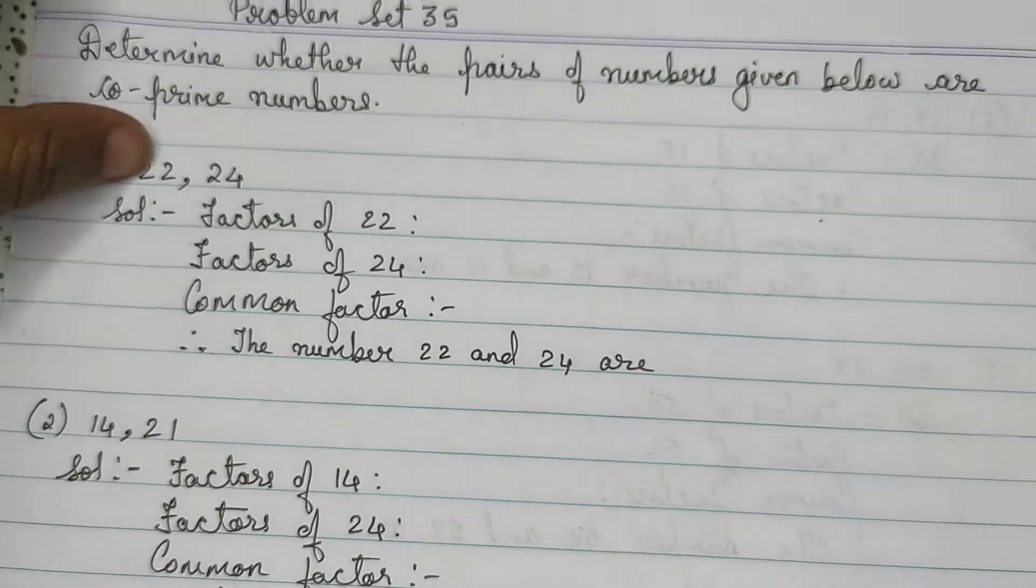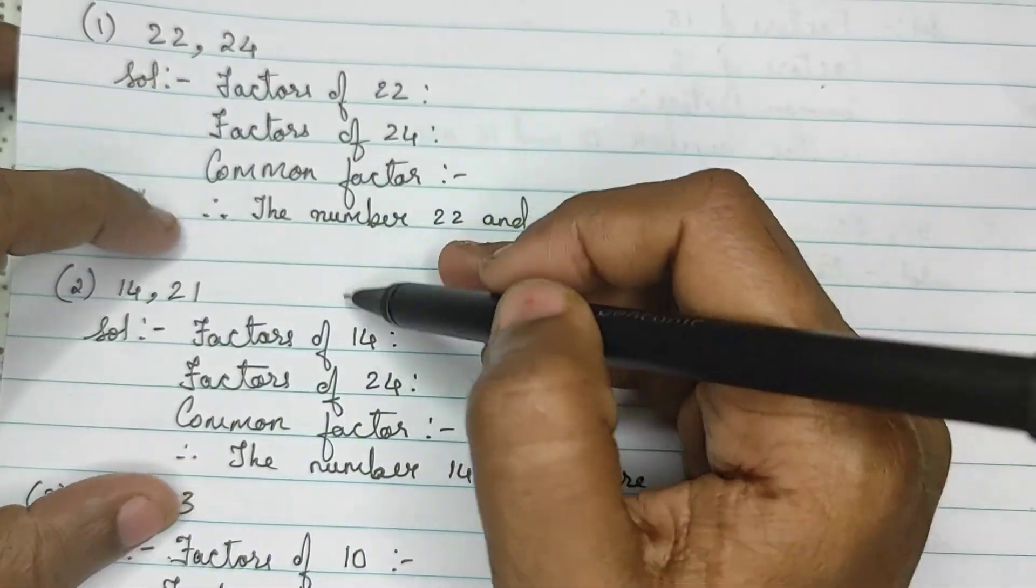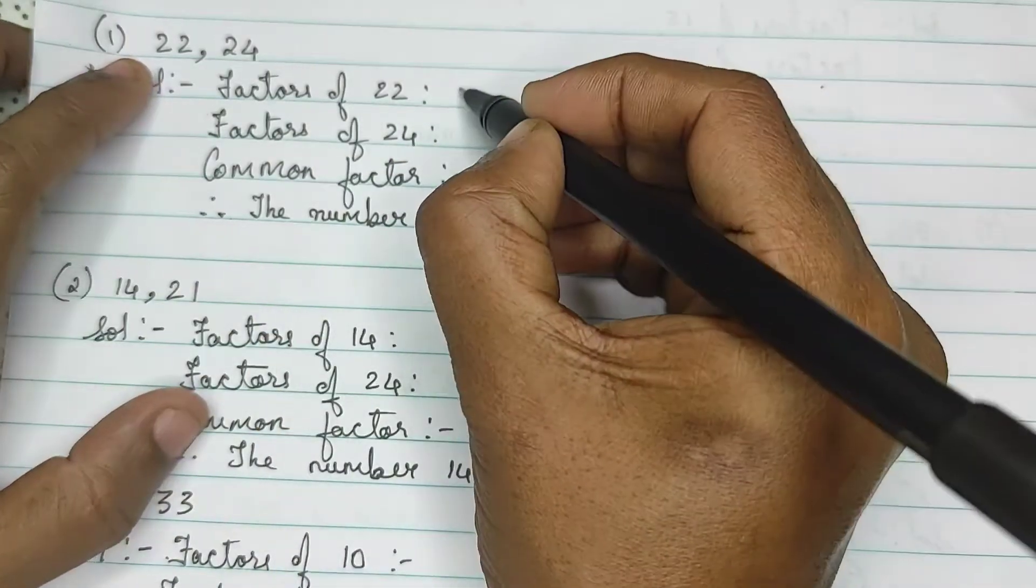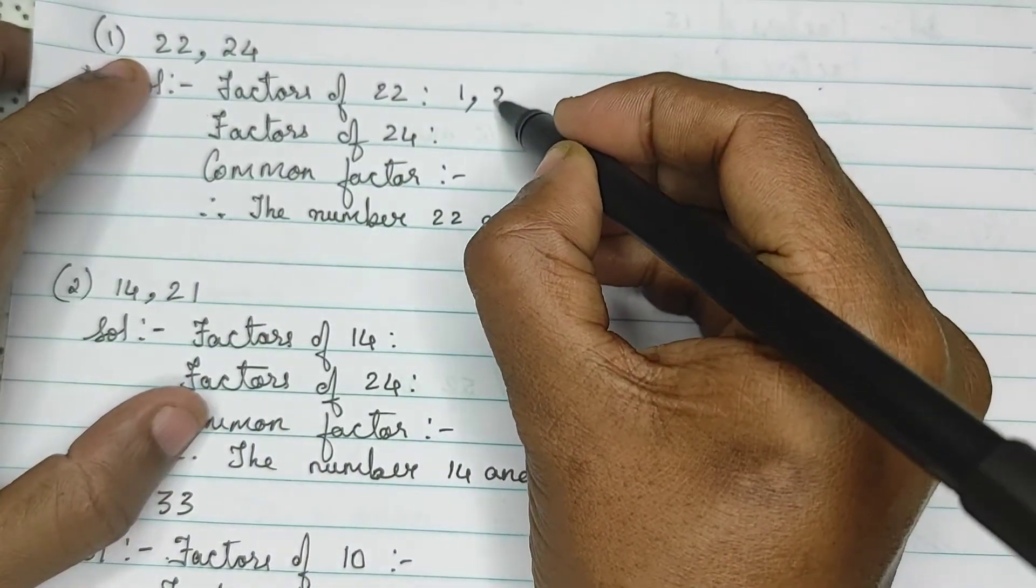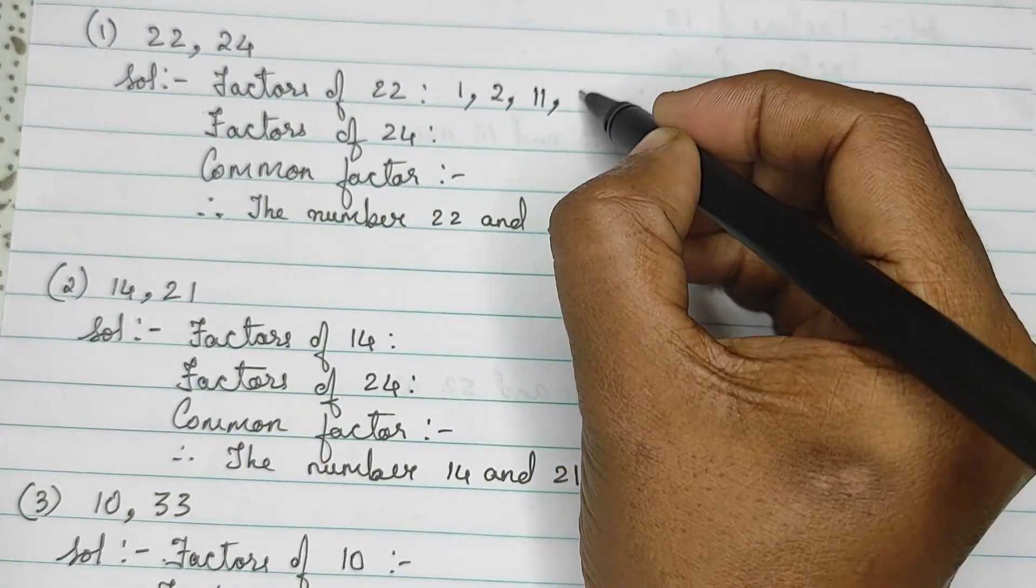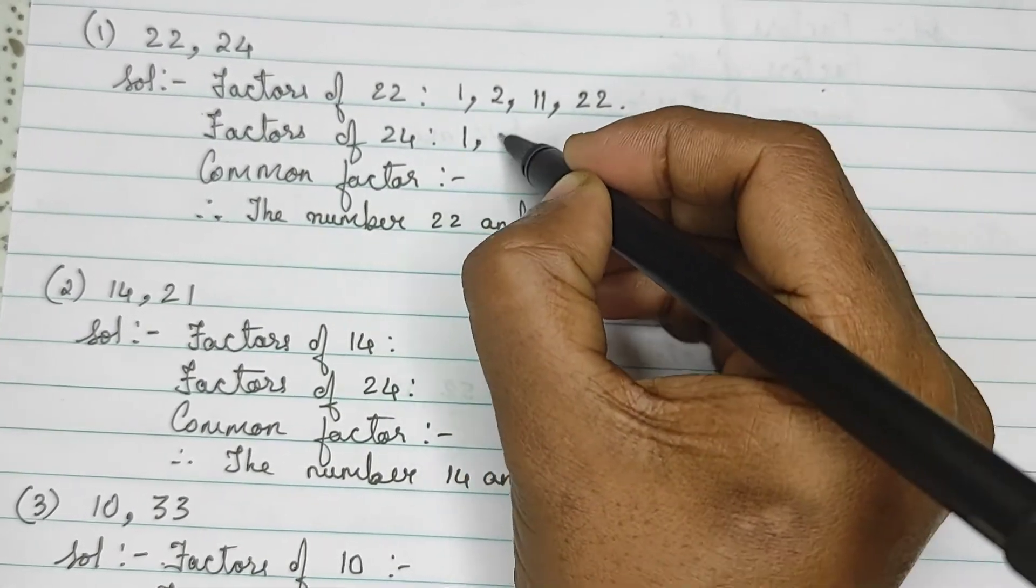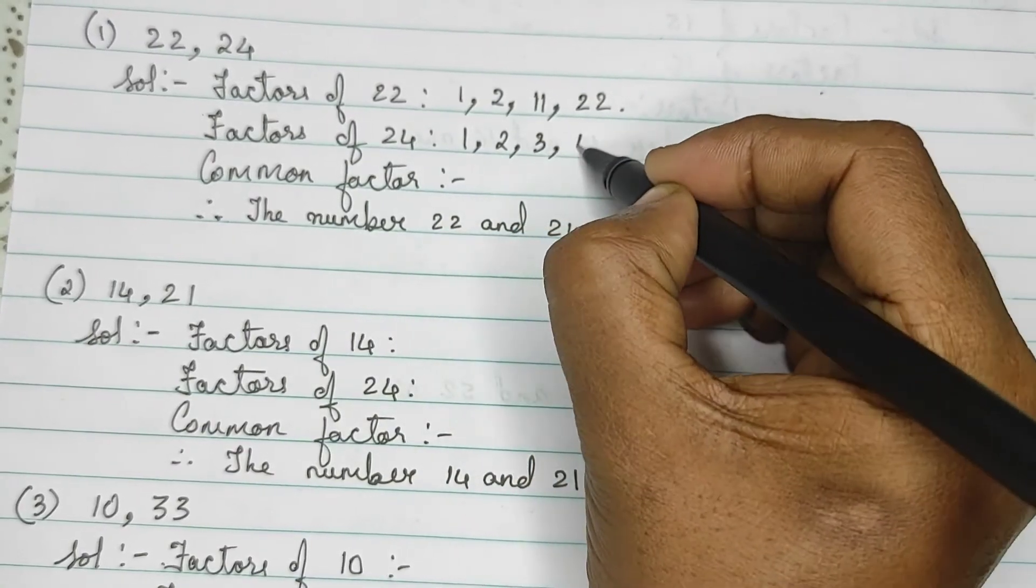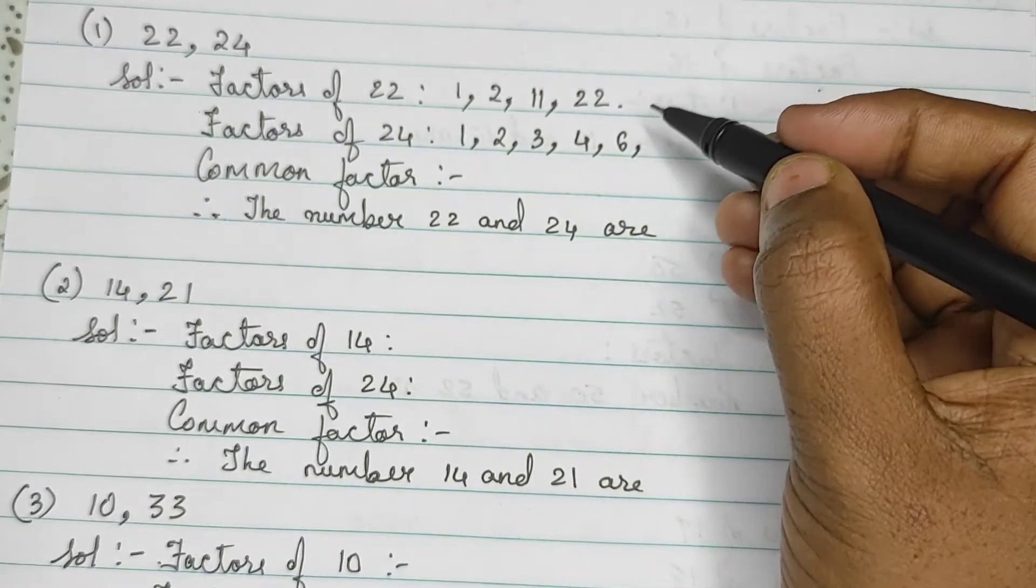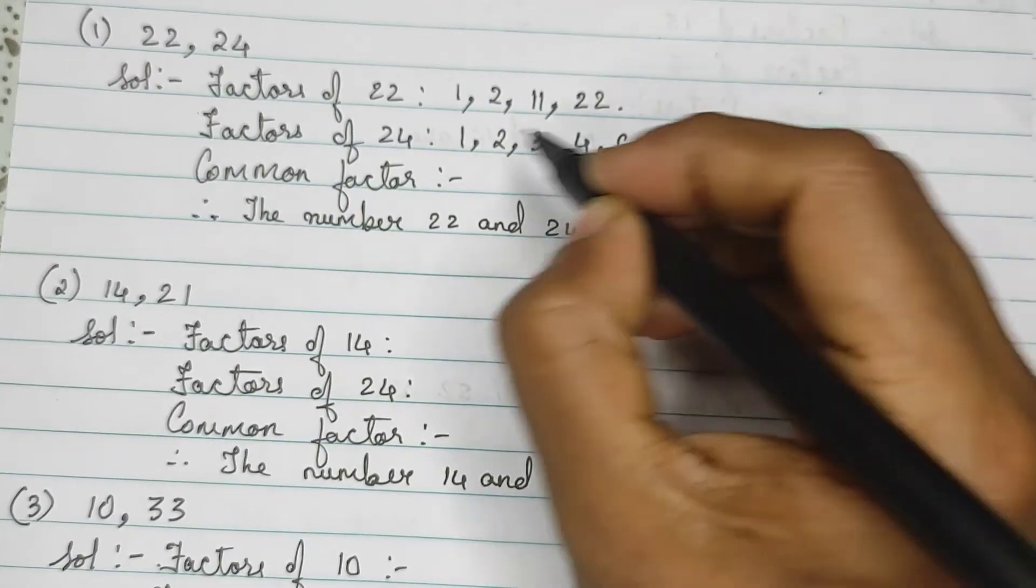Let's solve our practice set. First question, see, this is the pattern you have to write. Factors of 22: So, 22 is divisible by 1, 2, 11 and 22. Then factors of 24: 1, 2, 3, 4, 6, 8, 12 and 24.